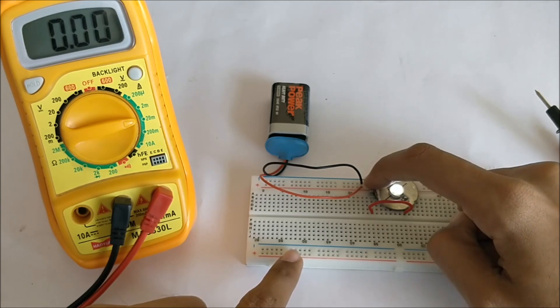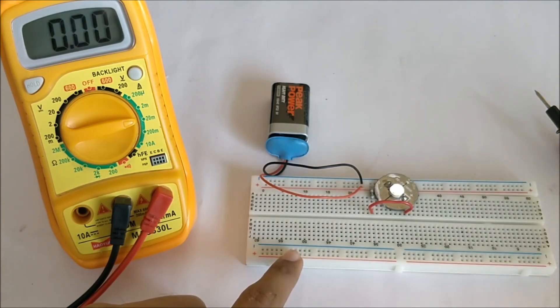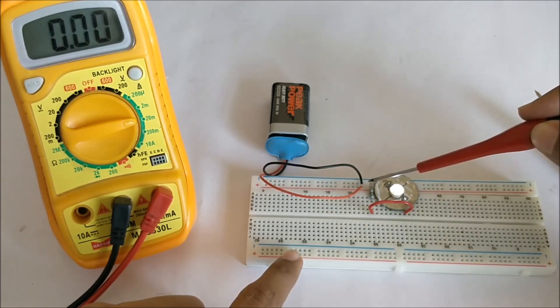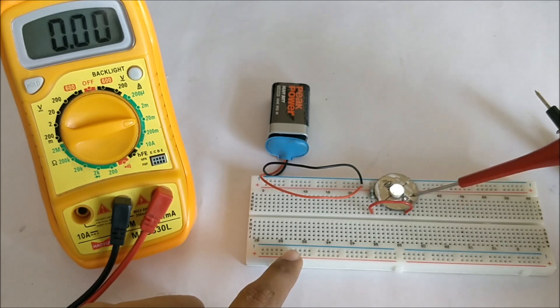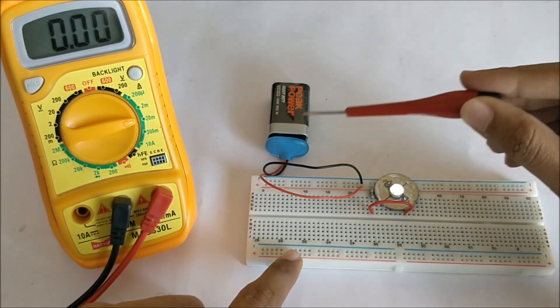So let us look at the circuit. We have a 9-volt battery. The positive wire goes to the resistor, and the resistor connects to the wire over here, and then it goes to the positive terminal of the LED. Through the negative, it goes back to the battery.